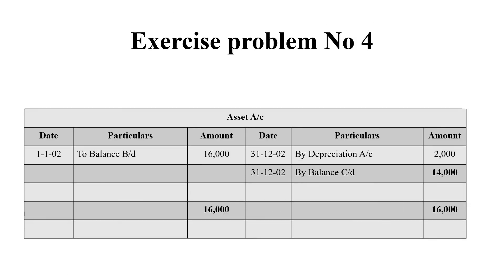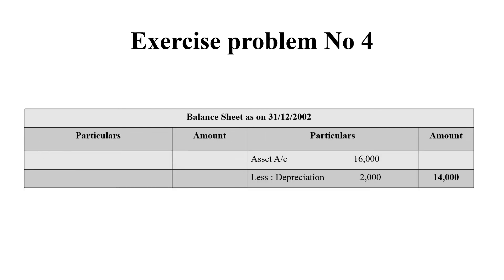This is the last year — 1st January 2002. On that day the balance is Rs. 16,000. Depreciation for that year is Rs. 2,000, so as on 31.12.2002 the value is Rs. 14,000. The grand total on both sides is Rs. 16,000. In the balance sheet as on 31.12.2002, the asset account shows Rs. 16,000, less the depreciation of Rs. 2,000, giving a final value of Rs. 14,000. This is when provision for depreciation is not maintained.